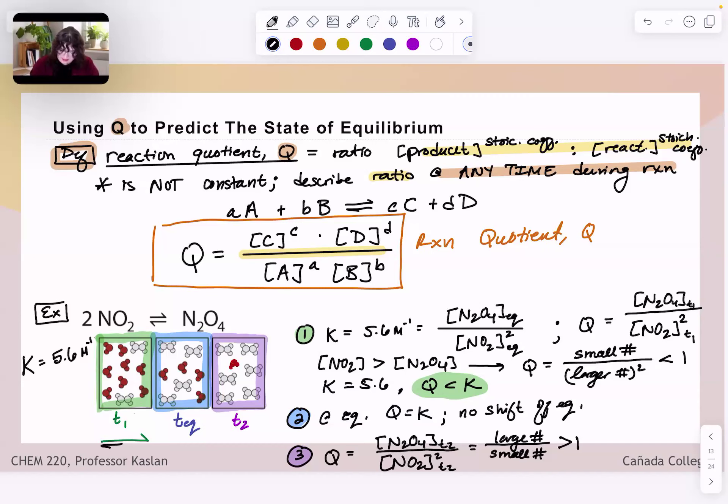And in this case, if Q is less than, sorry, greater than K, which let's go ahead and presume it is, I don't know the value of Q here, but let's just assume it's something greater than one, but less than our 5.6.